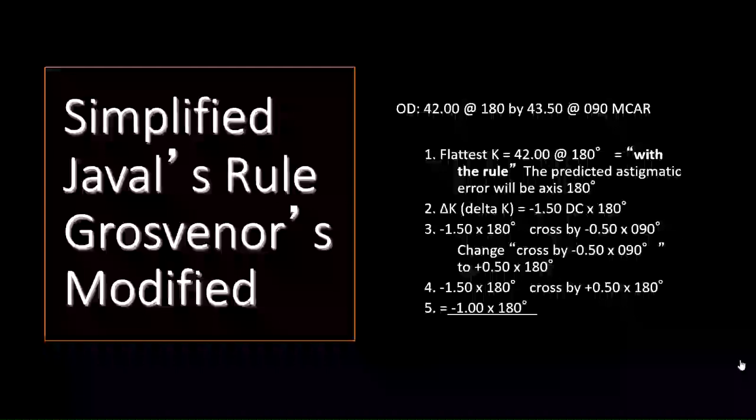We then take the corneal astigmatism plus the lenticular astigmatism to figure out the predicted astigmatism. So we have one and a half diopters at 180 and a half diopter at 90. The half diopter at 90 will subtract because it's smaller than the 1.50. So we will then have one diopter of astigmatism at 180.